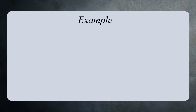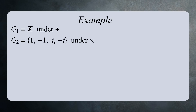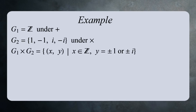Let's see an example. Let G1 be the group of integers under addition, and G2 be the group {1, -1, i, -i} under multiplication. The direct product of G1 and G2 is the set of all pairs where the first component is an integer and the second component is one of the four numbers in G2.